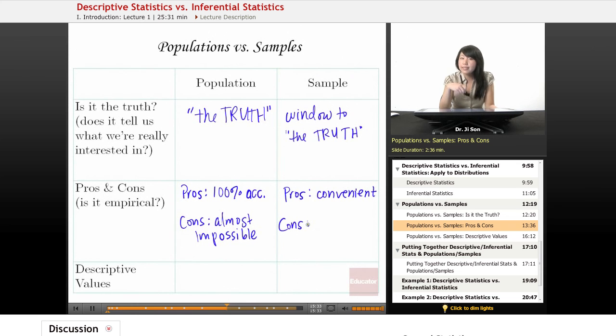But here's the big con that you need to worry about. The con is that the sample might be what's called biased. And by biased, I don't necessarily mean like the sample's like racist or prejudiced in some way. I just mean that the sample may not be representative of the population.